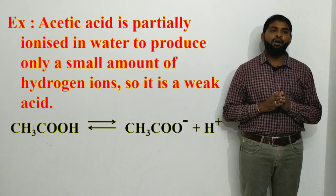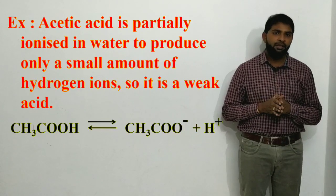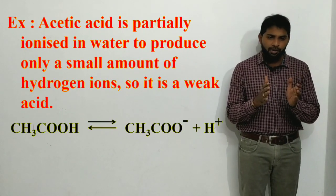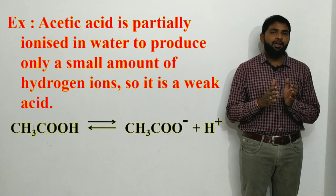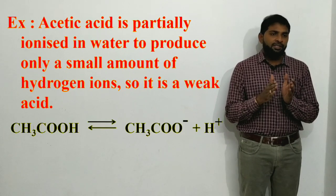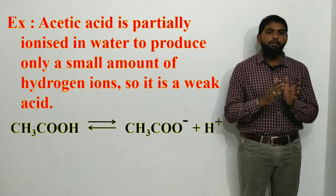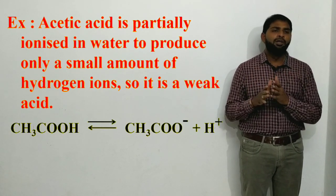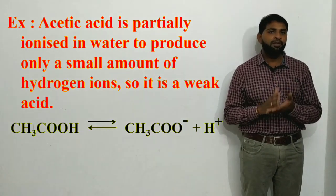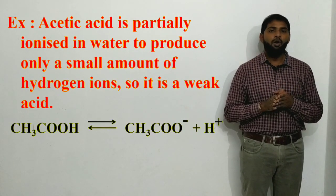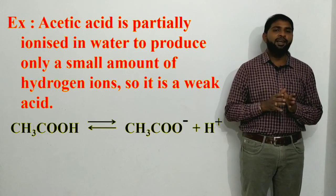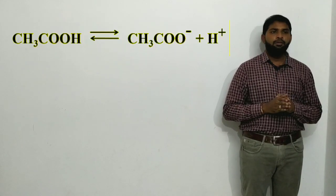For example, acetic acid is partially ionized in water to produce only a small amount of hydrogen ions, so it is a weak acid. If you take 100 molecules of acetic acid, not all 100 molecules undergo ionization — only some, perhaps 50%, 60%, 70%, or 80% — but not 100%. That is why acetic acid is a weak acid.